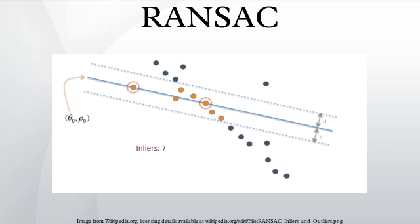Select a random subset of the original data. Call the subset the hypothetical inliers. A model is fitted to the set of hypothetical inliers. All other data are then tested against the fitted model.